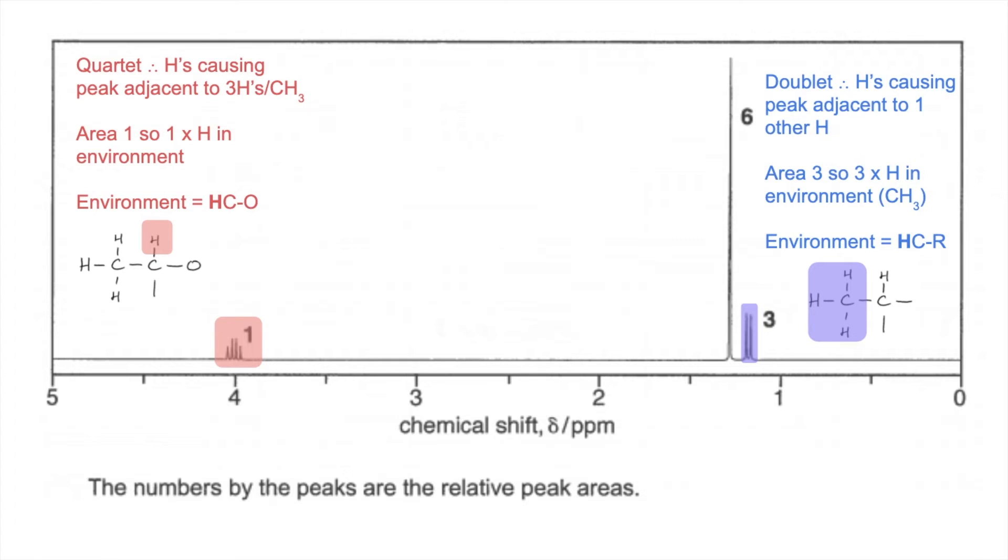And then we'll finish with this tall peak, area 6. So it's a singlet. So the hydrogens causing the peak aren't adjacent to any other hydrogens. The area is 6, so we've got 6 protons in the environment. So in other words, there must be 2 CH3 groups, 2 equivalent CH3 groups. And the environment is HCR. So that little bit of the molecule is looking a bit random at the moment of just those 2 CH3 groups.